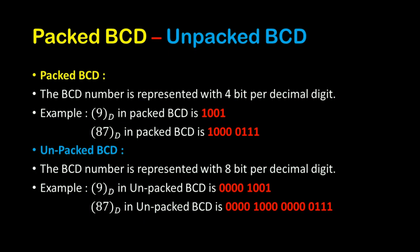In Packed BCD, the BCD number is represented with 4 bits per decimal digit. For example, if you want to represent the decimal digit 9 in Packed BCD form, then it is represented as 1001 — that is 4 bits per decimal digit.